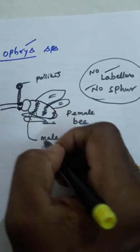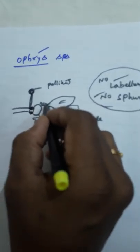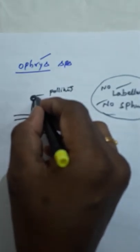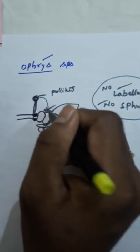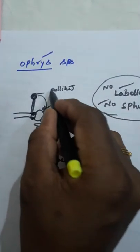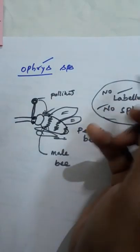For mating purpose, the male bee mate with this flower. At the time of mating time, the insect is searching time. That insect searching time, the pollinium touch to that insect. Later, the insect fly away and visit another flower. The pollinium can transfer from one flower to another flower.